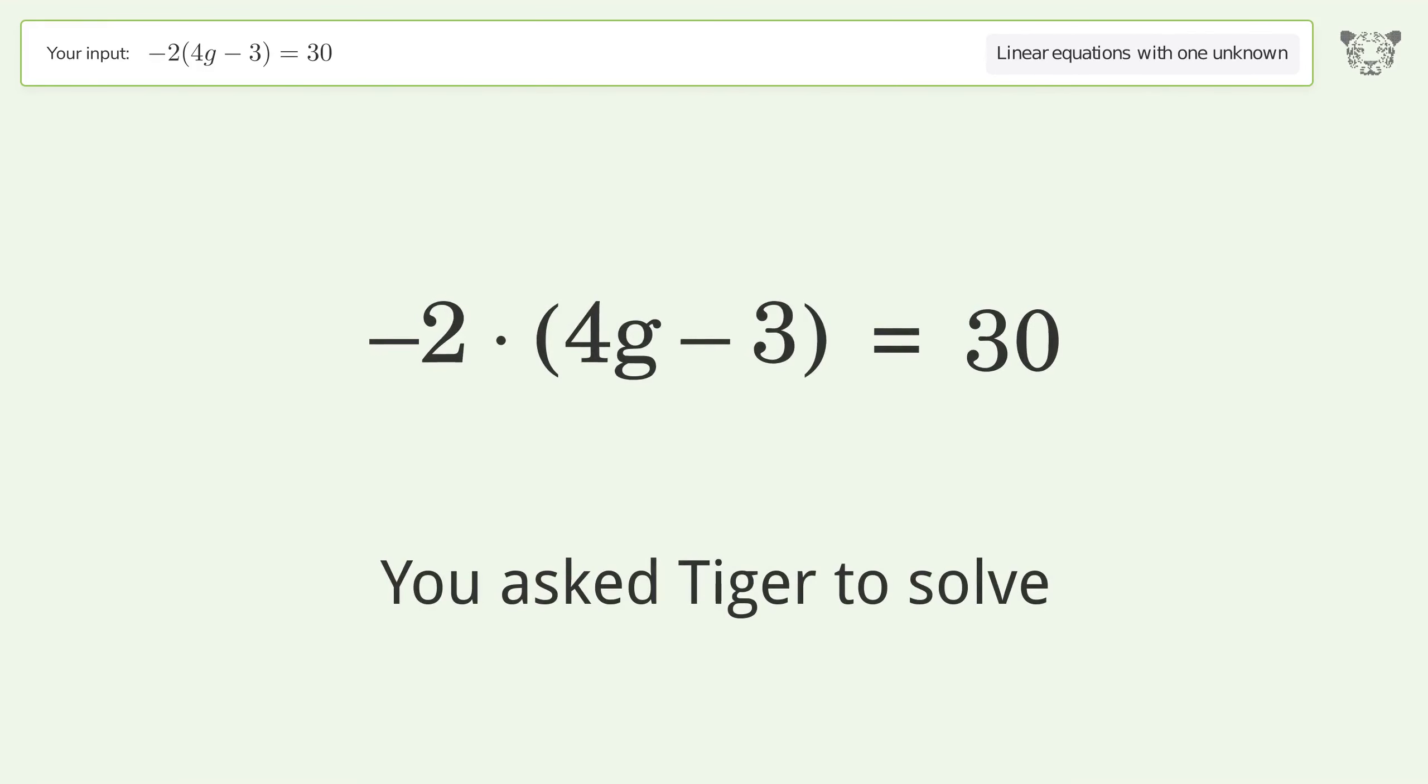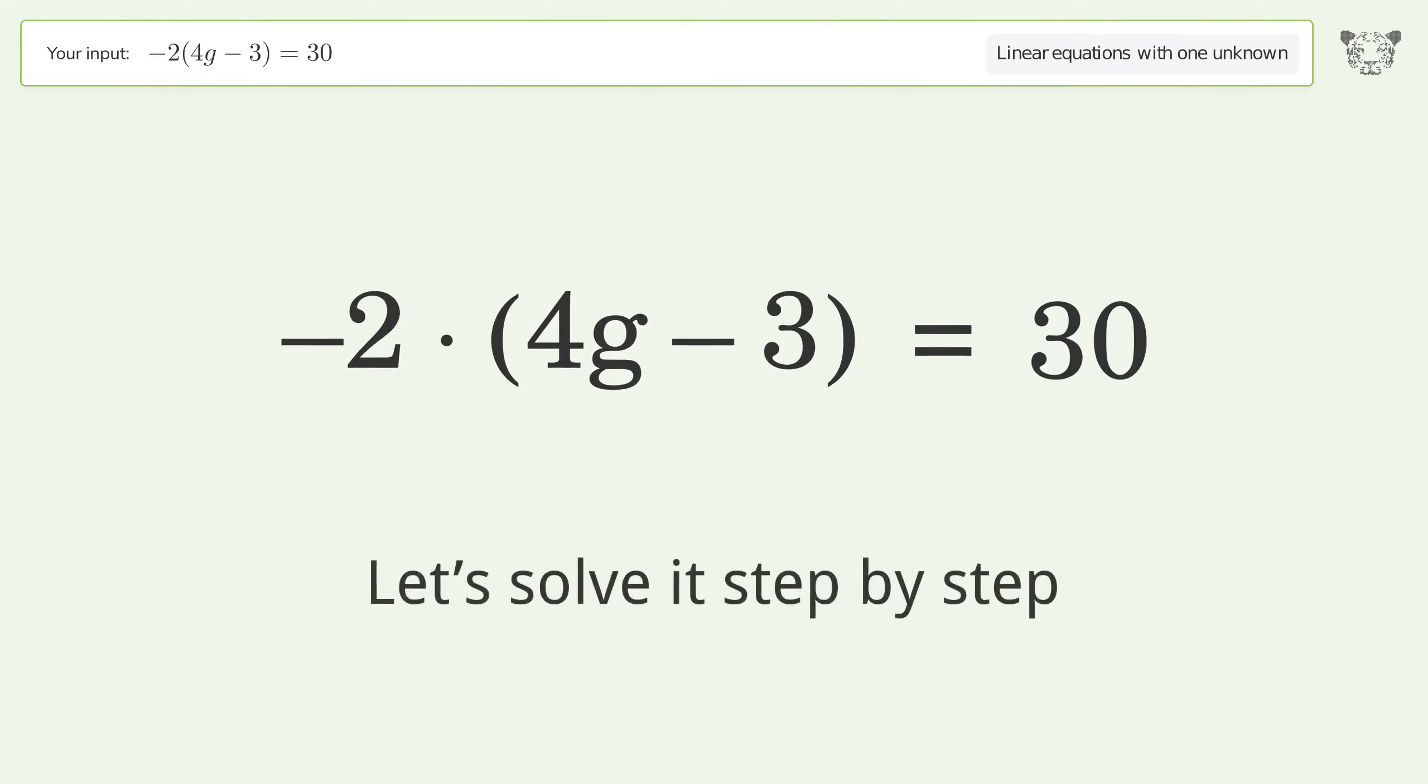You asked Tiger to solve this. It deals with linear equations with one unknown. The final result is g equals negative 3. Let's solve it step by step.